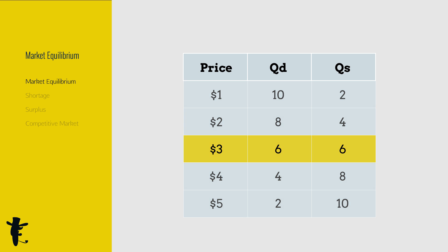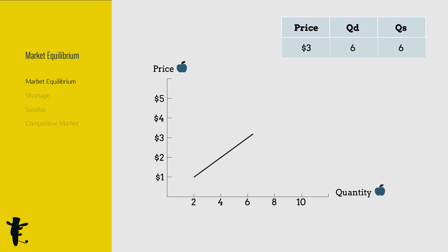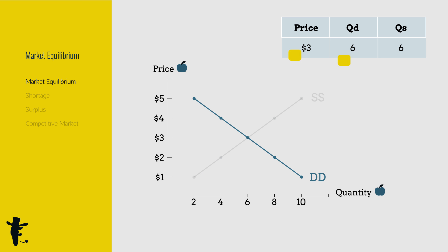At six, plot the values into a graph, and this is simply the intersection between the demand and supply curves.